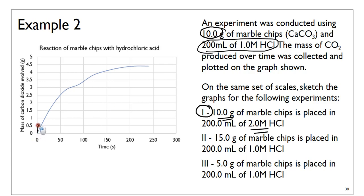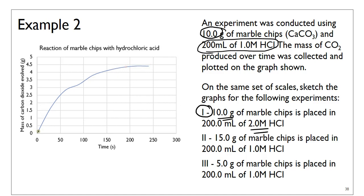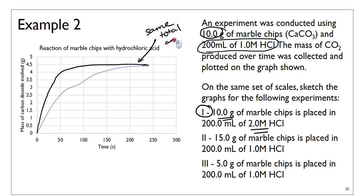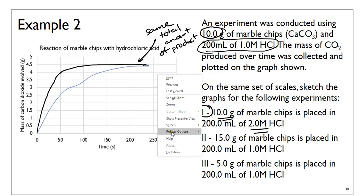So the graph for number one should reach the same plateau as the original but with a steeper slope — the same total amount of product is made, but the reaction rate is higher for number one.